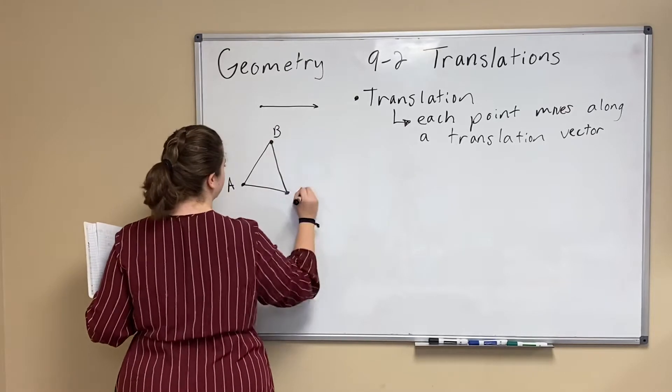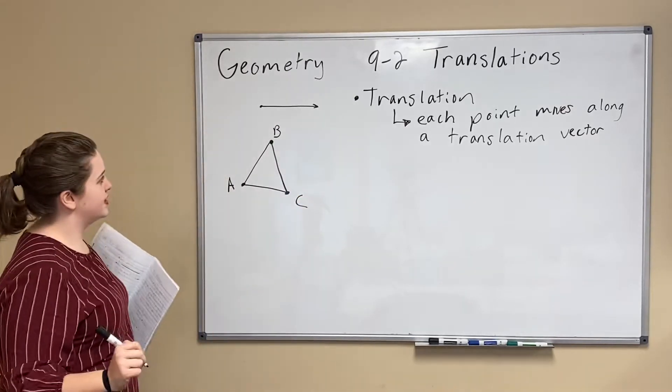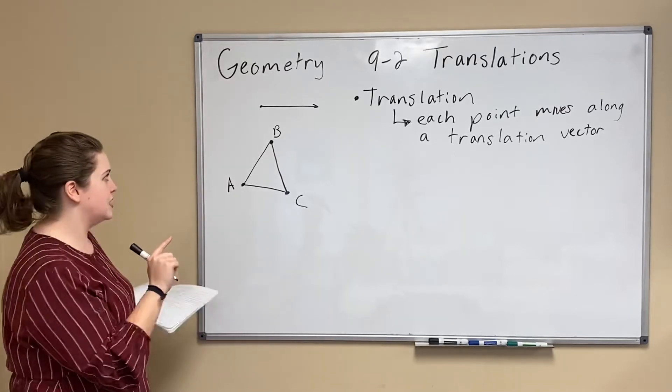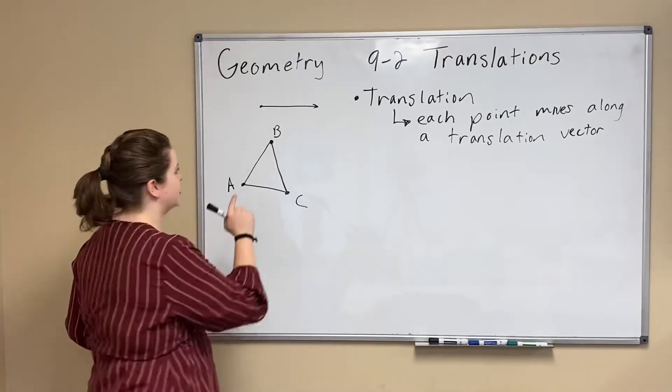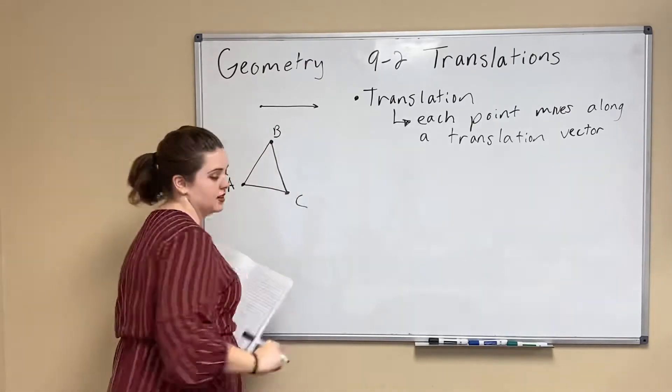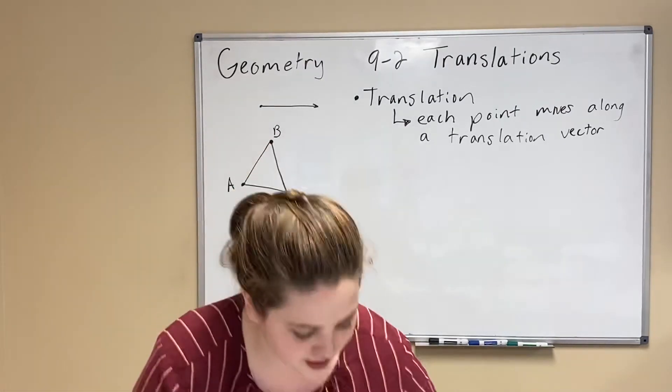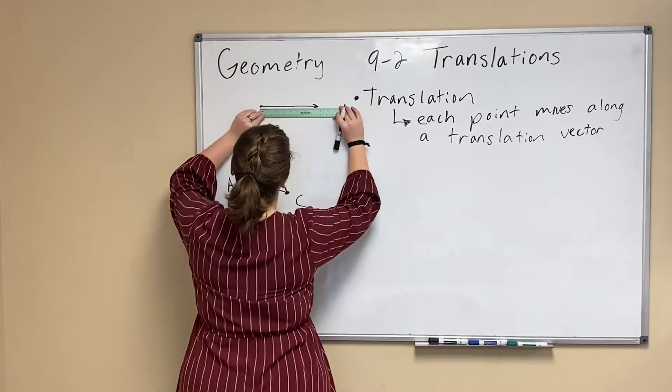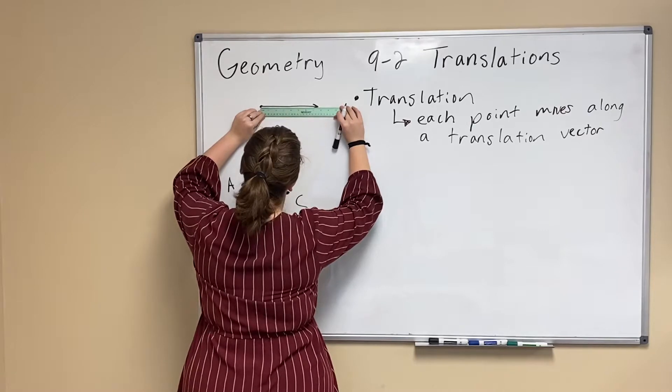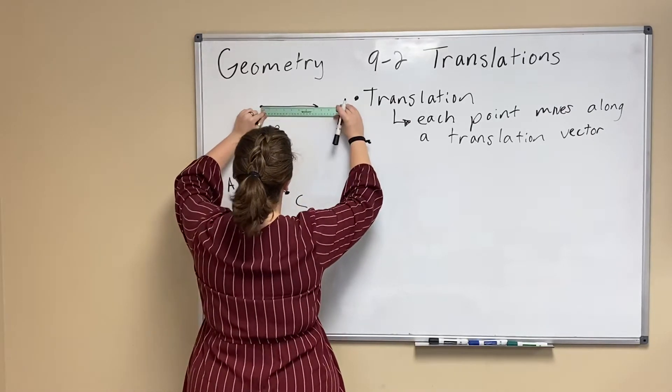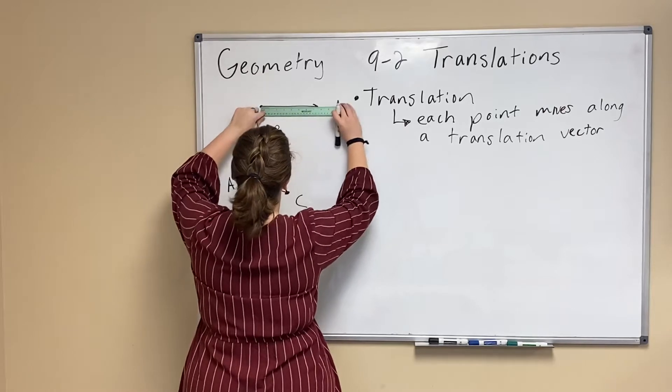ABC and I said I'm moving it along that vector, then I need to move each point this direction and this distance so I'm going to break out my ruler again. I'm going to measure this line I drew. Let's see it's about seven and a half inches long and I have to move in this direction.